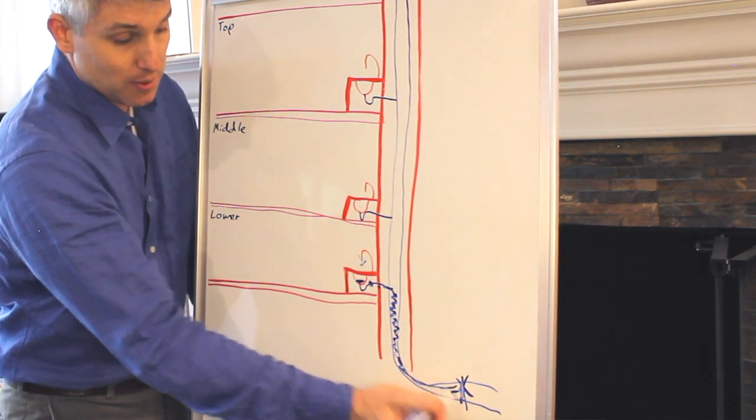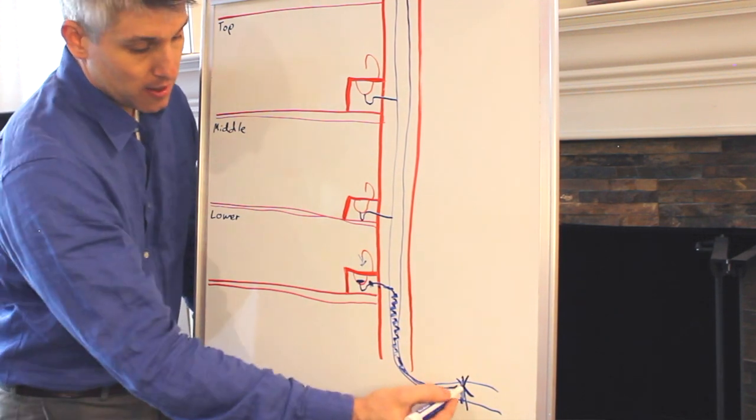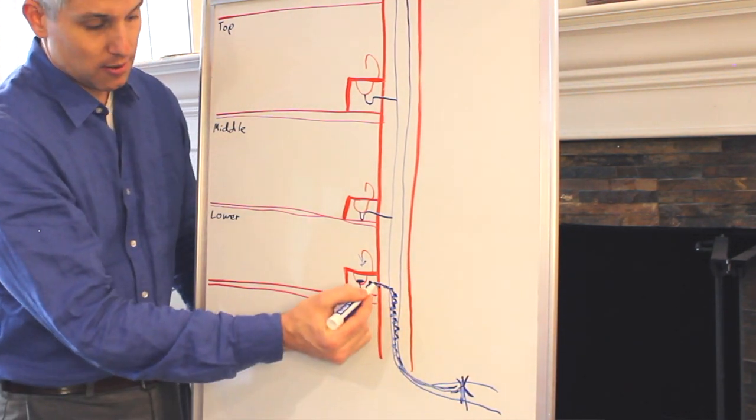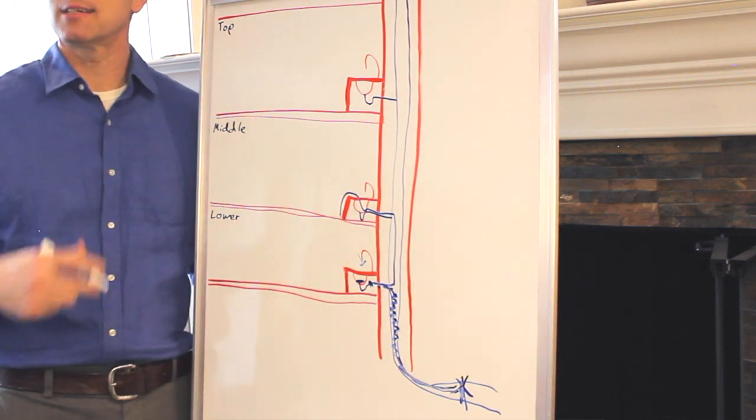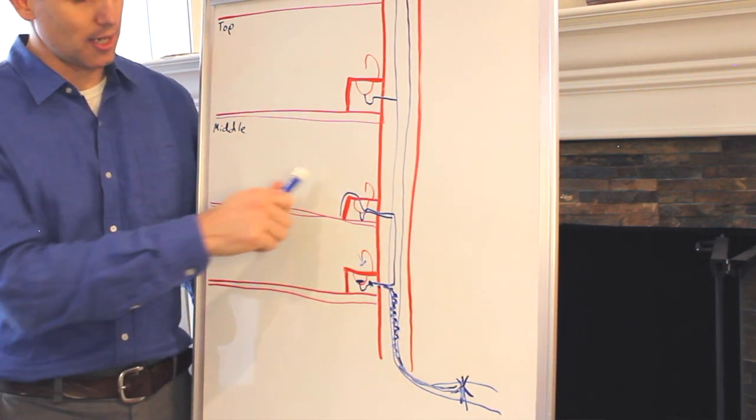If there happened to be two clogs at the same time, then water would find its way here, find my clog, and then go back up to the next lowest drain, in this case the floor above me.